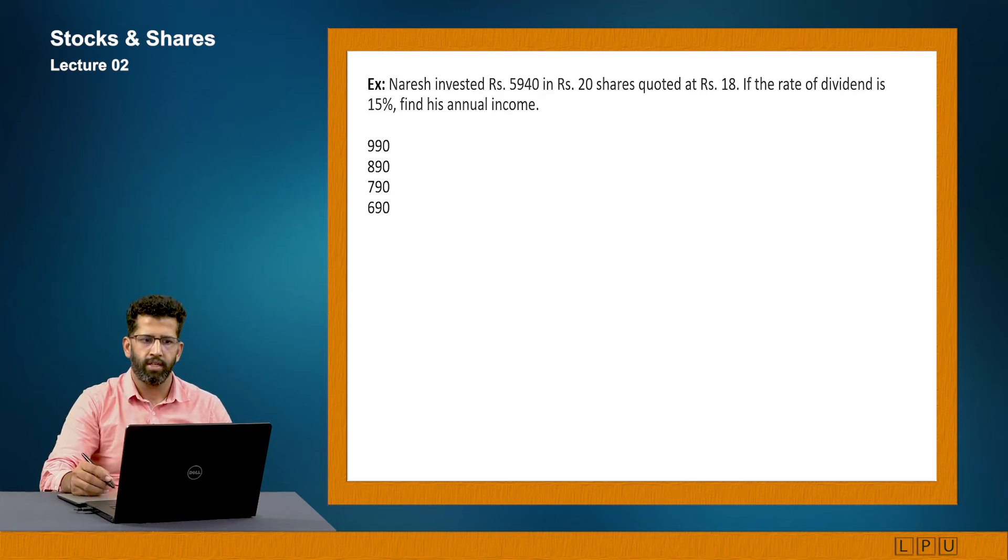Now, Naresh invested rupees 5940 in rupees 20 share, quoted at rupees 18. If the rate of dividend is 15, find his annual income. Now if you look at this question, they are asking you about the annual income. It is given that he is earning 15 percent. Now 15 percent on what? 15 percent he is getting on 20 rupees, not 18.